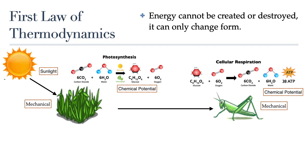Throughout the whole system, whenever there is some sort of energy transformation, some energy is lost. It is never destroyed, because energy cannot be destroyed, but any loss of energy is released as heat or thermal energy. There's another thing happening in this image: the grasshopper is eating the grass as a source of energy, but is also eating the grass as a source of nutrients that it will use to build its cells and body parts through a series of catabolic and anabolic pathways.